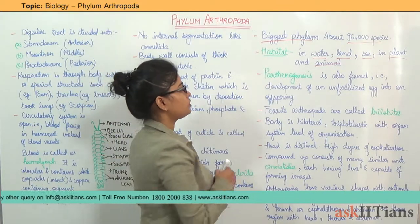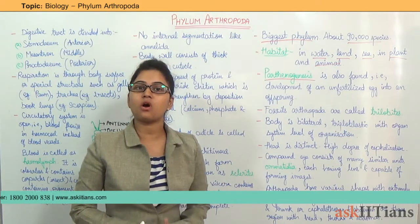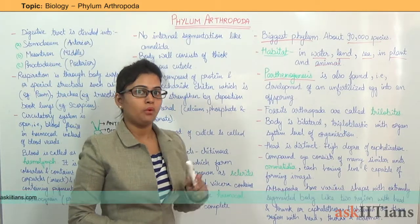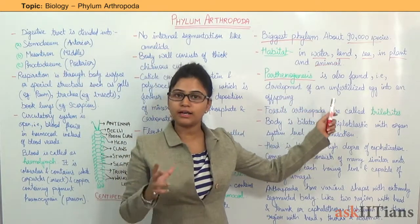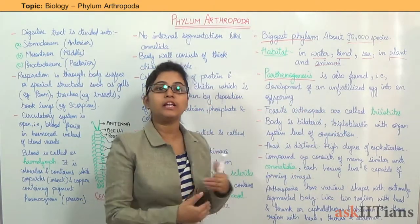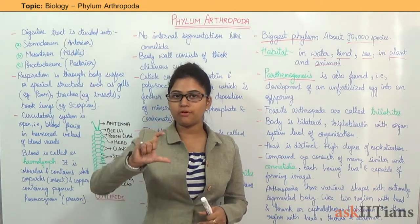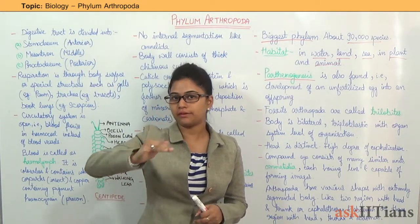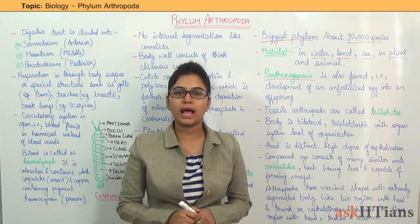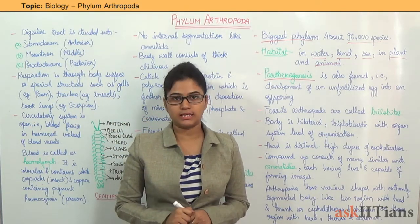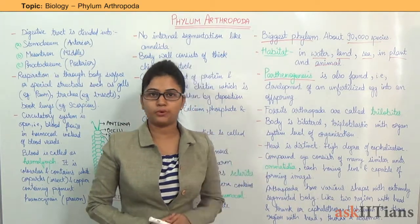Next, Parthenogenesis is found in case of Arthropoda. What is Parthenogenesis? The development of an unfertilized egg into an offspring is known as Parthenogenesis, and this Parthenogenesis is found in Arthropoda.